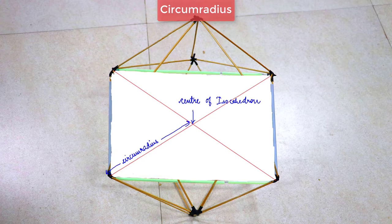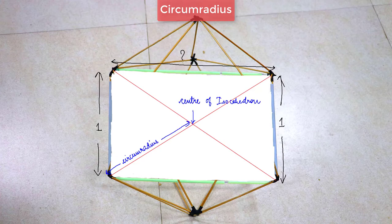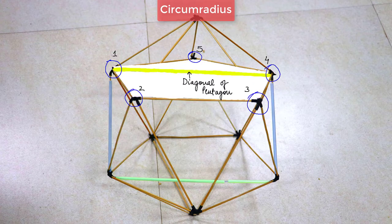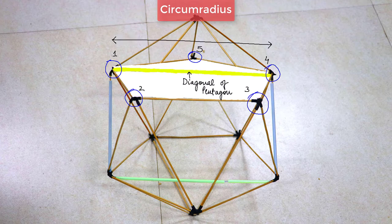Now if the side of this icosahedron is of unit length, then what would be the length of this rectangle? If you notice, these five points make a pentagon, and the green line is actually the diagonal of this pentagon. So what would be its value? Well, it's nothing but the golden ratio.